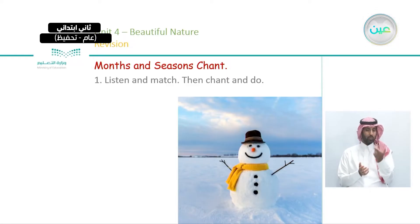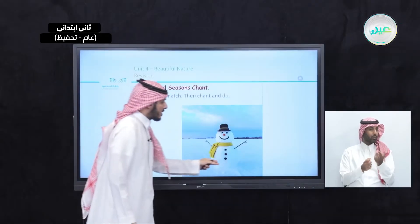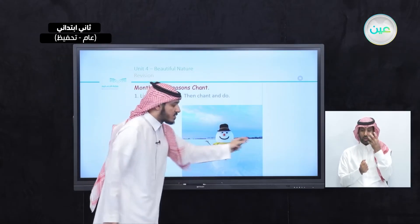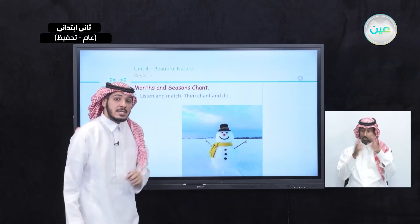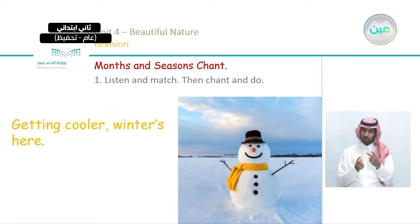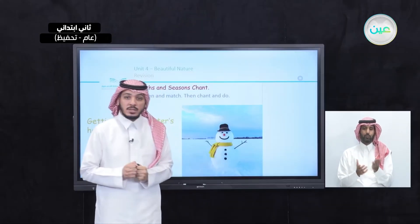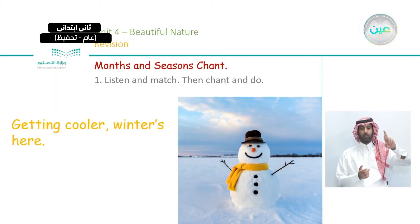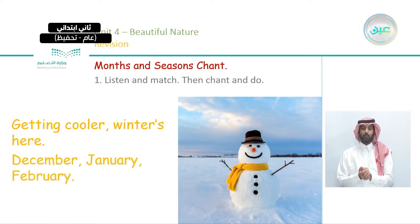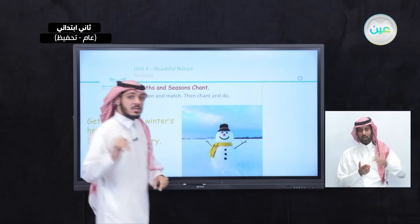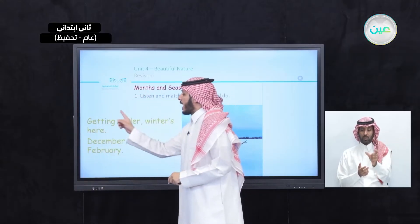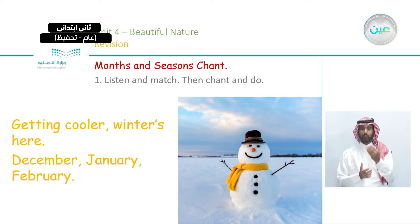Now what is this? This is a snowman — we have some snow here. Which season is this? It's winter! Getting cooler, winter is here. It's cold. The three months of winter are December, January, February.